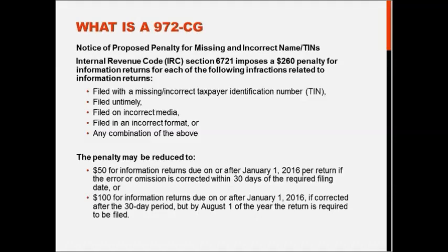If you use the TIN matching system consistently as standard practice to set up all payees, it's entirely possible you'll never reach this stage again — you would never put someone in your system without a legitimate tax ID number. The only remaining mistake would be not sending a 1099 when required. When you get this notice, it tells you the penalty is $260 per form. And by the way, if you don't send it to the government that's $260; if you don't send it to the payee, that's another $260.